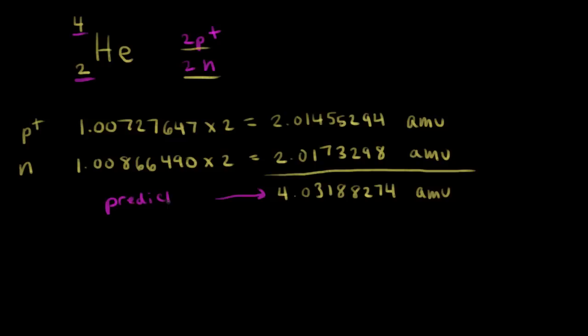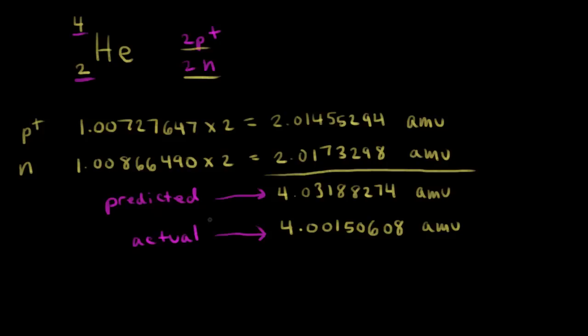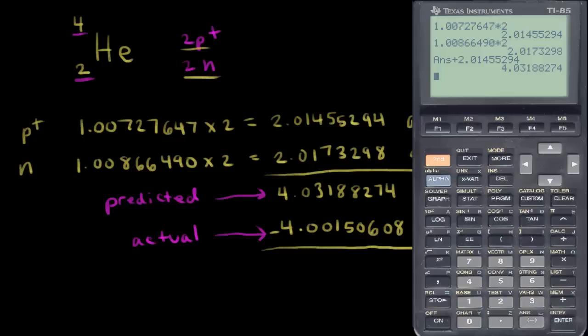This is the predicted mass. The actual mass of a helium-4 nucleus has been measured to be 4.00150608 AMUs. This is the actual mass. There's a difference — they're not the same number. The predicted number is higher than the actual mass. So let's calculate the difference between those two numbers by subtracting the actual from the predicted.